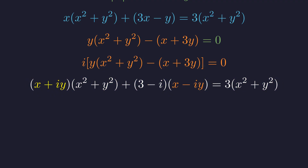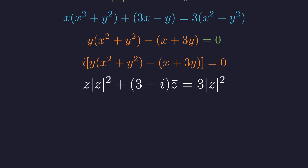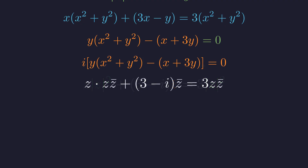Now substitute z equals x plus iy and z-bar equals x minus iy. This becomes z times the magnitude squared of z plus the quantity 3 minus i times z-bar equals 3 times the magnitude squared of z. Recalling that the magnitude squared of z equals z times z-bar and substituting, we can divide both sides by z-bar, assuming z is not zero. This simplifies to z squared plus 3 minus i equals 3z.